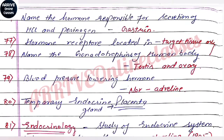The cells that secrete HCl are oxyntic cells of the wall of the stomach. Hormone receptors are located only in the target tissue, because only the target cell responds to a particular hormone.